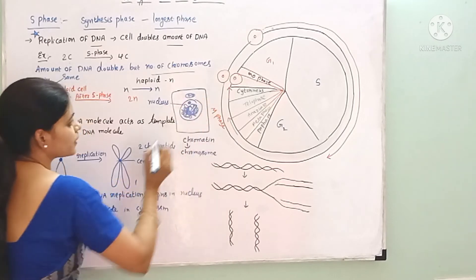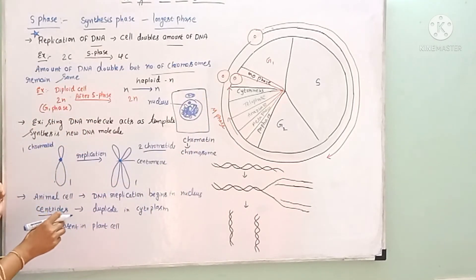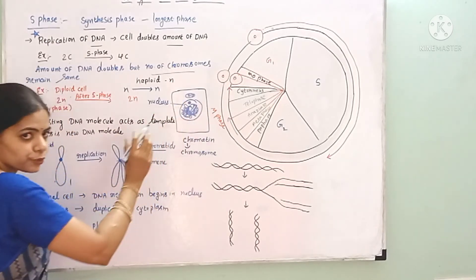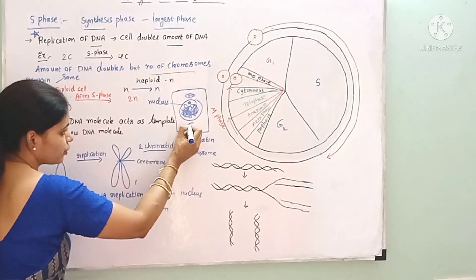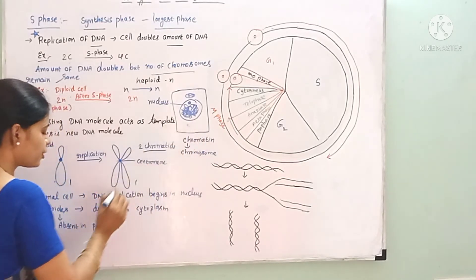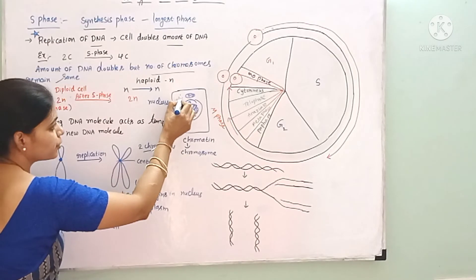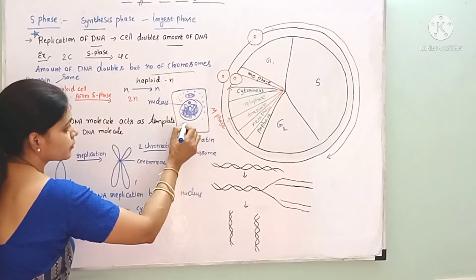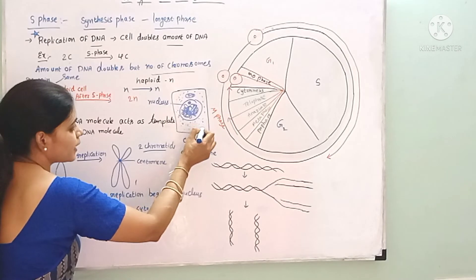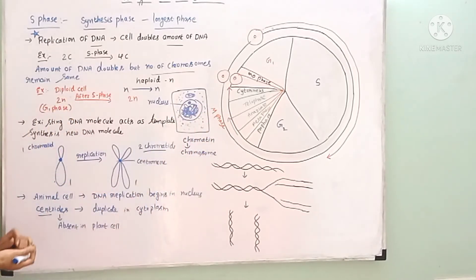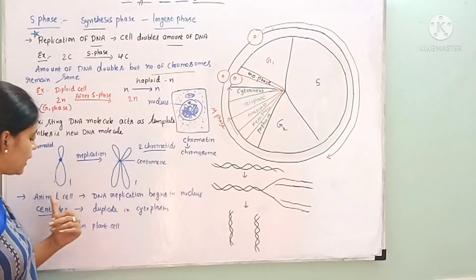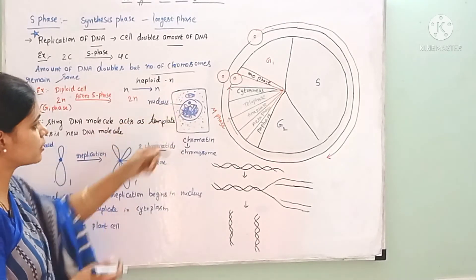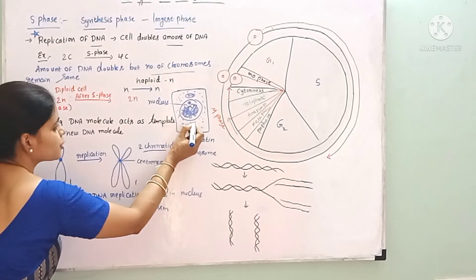Centriole duplication also occurs. This is very important: In animal cells, DNA replication occurs in the nucleus, and centriole duplication occurs in the cytoplasm.